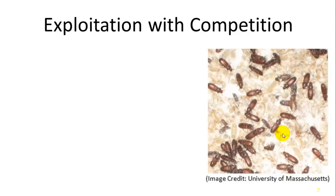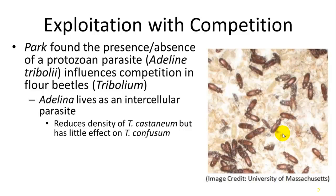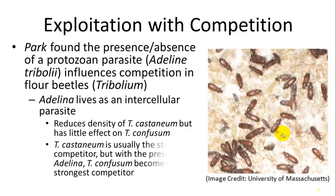Another complex interaction is exploitation combined with competition. Park found that a protozoan parasite, Adelina tribolii, influences competition between different species of Tribolium flour beetles. Adelina lives as an intracellular parasite in Tribolium castaneum but not in Tribolium confusum. When put together, castaneum usually outcompetes the other, but when the intracellular parasite is present, it reduces castaneum's ability to outcompete, and confusum becomes the stronger competitor.